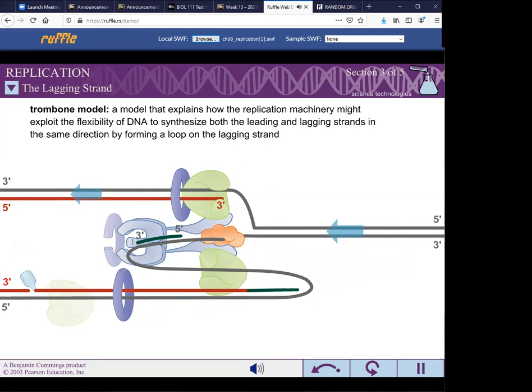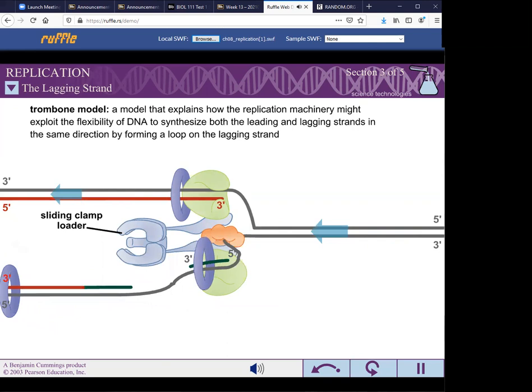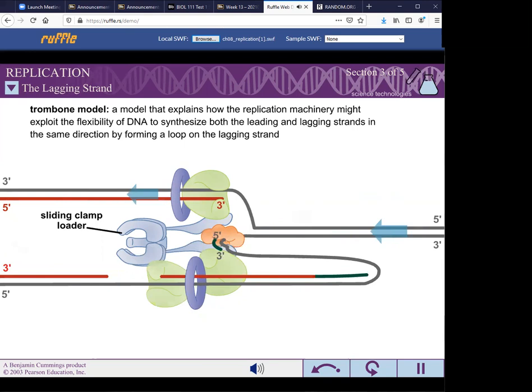The DNA polymerase holoenzyme also contains a sliding clamp loader. This multi-protein complex loads sliding clamps onto the primed DNA. The sliding clamps help the DNA polymerase find the primed DNA and then help increase the processivity of the DNA polymerase.